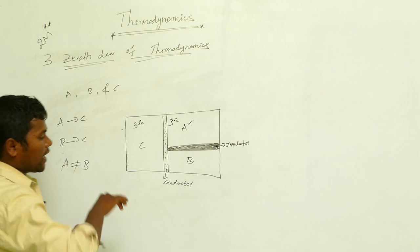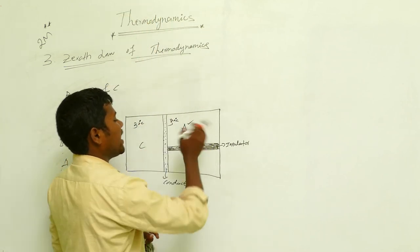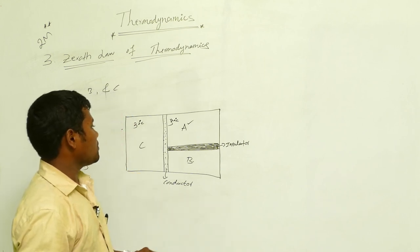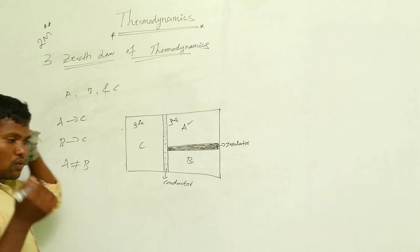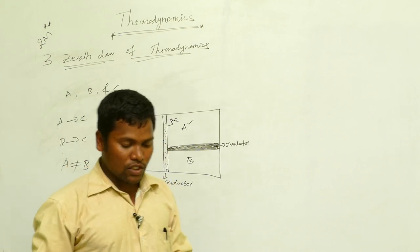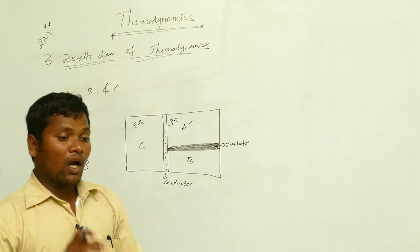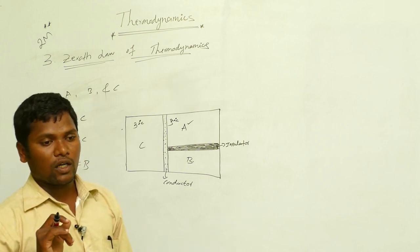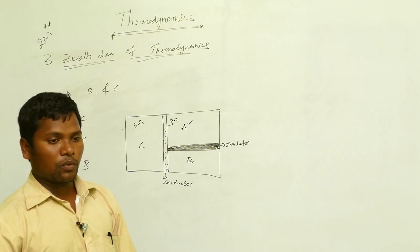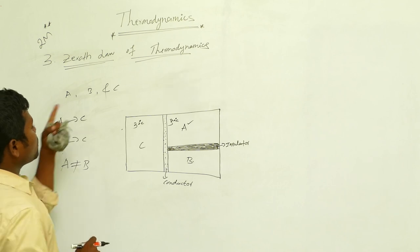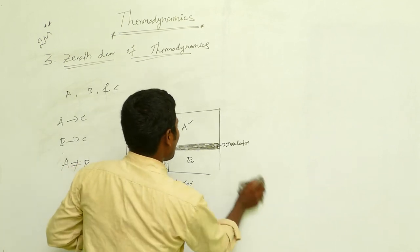Now if I remove the insulating barrier between A and B, then A and B will also automatically come to equilibrium. So finally, if any two systems are separately in equilibrium with a third system, the two systems are automatically in equilibrium with each other. This is the zeroth law of thermodynamics.